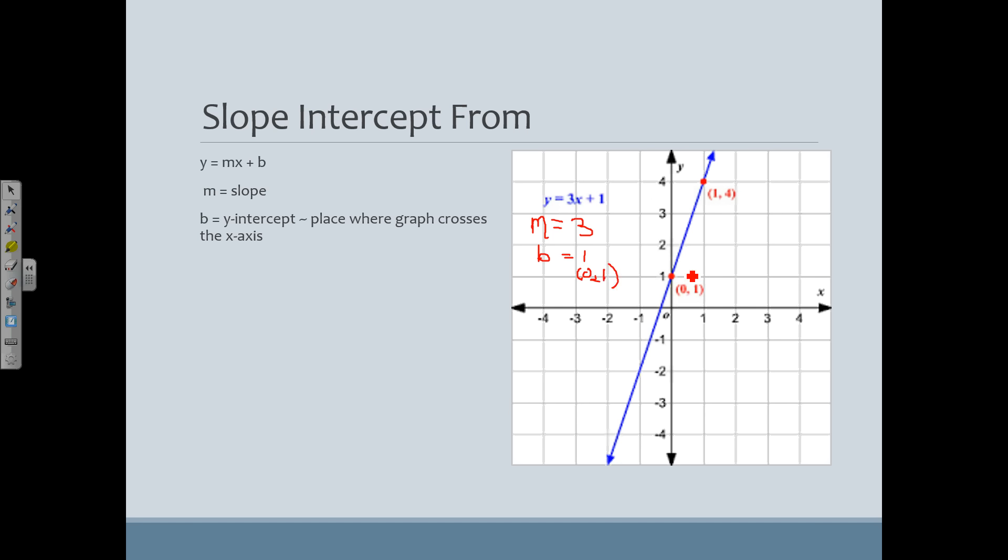Alright, so we have the graph of this line and I want you to notice, if I were to make a slope triangle here, it's going to be 1, 2, 3, and then 1. So the slope is 3 over 1 and that's right here. And then the y-intercept, the place where it crosses the y-axis is right here at (0, 1). And that's where it comes into that equation there. So that is how we can just use an equation to graph a line.